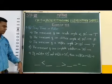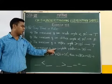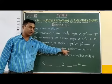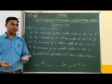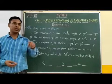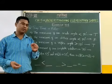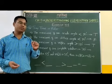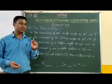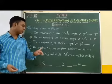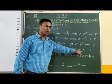Next, statement D: the measure of one complete rotation is equal to 360 degrees. We know that if we complete one rotation, then the measure of that one complete rotation is 360 degrees. Therefore, the given statement is true.